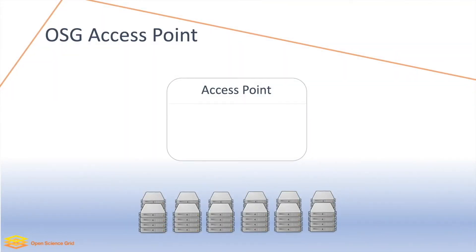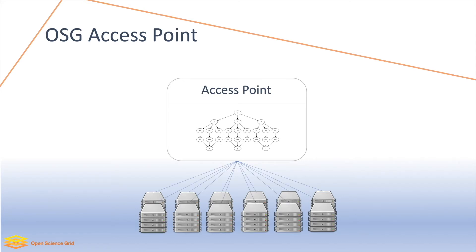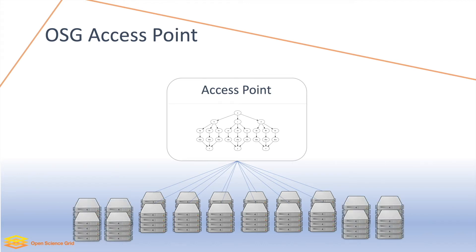You can access the Open Science Pool via another OSG service called an Access Point. From an Access Point, you can build and submit your workload to run on associated computing resources like the Open Science Pool. Your campus or research collaboration may operate an Access Point that manages work on one or more sources of associated computing capacity.